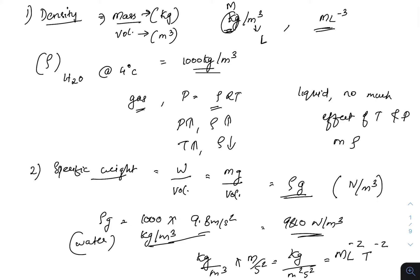For gases, we have the relation P = ρRT, where ρ is the density. From this relation, as pressure increases, density will increase. Also, as temperature T increases, ρ will decrease. But for liquids, there is no such relationship — temperature or pressure does not have much effect on density.